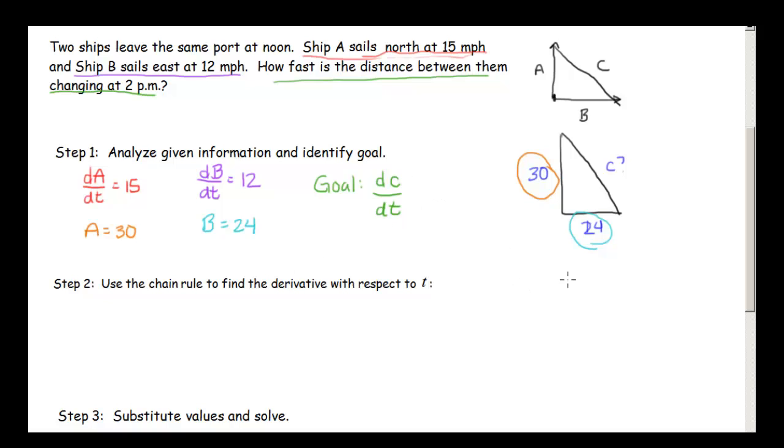Our relationship between our variables is given by that Pythagorean theorem. A squared plus B squared equals C squared. Now notice this one's a little different from the last one because in the last one our C was always constant. But our C is always changing because that's the distance between our two boats. So if we take the derivative of this we're going to have 2A dA dt plus 2B dB dt equals 2C dC dt.